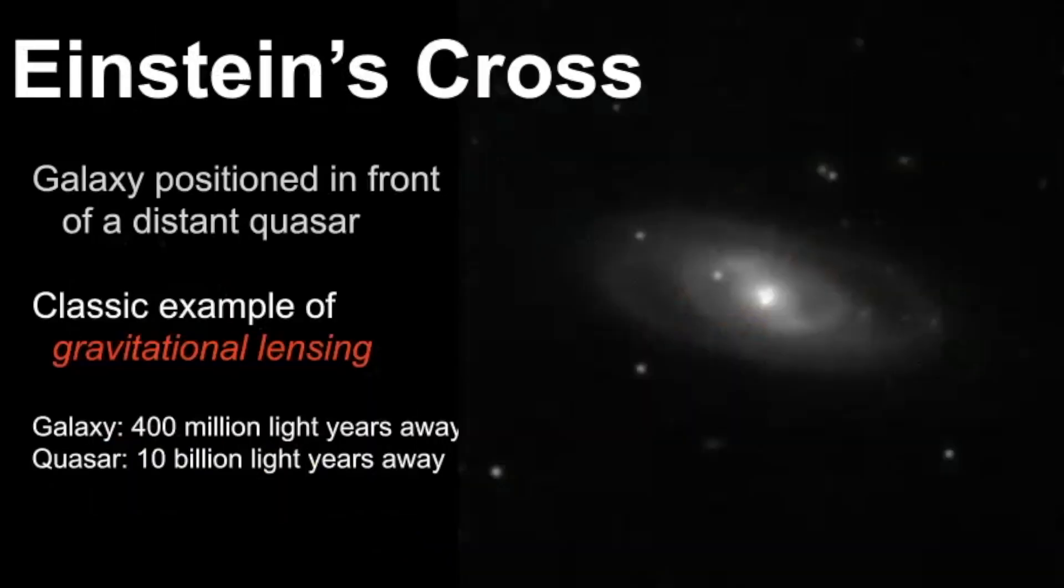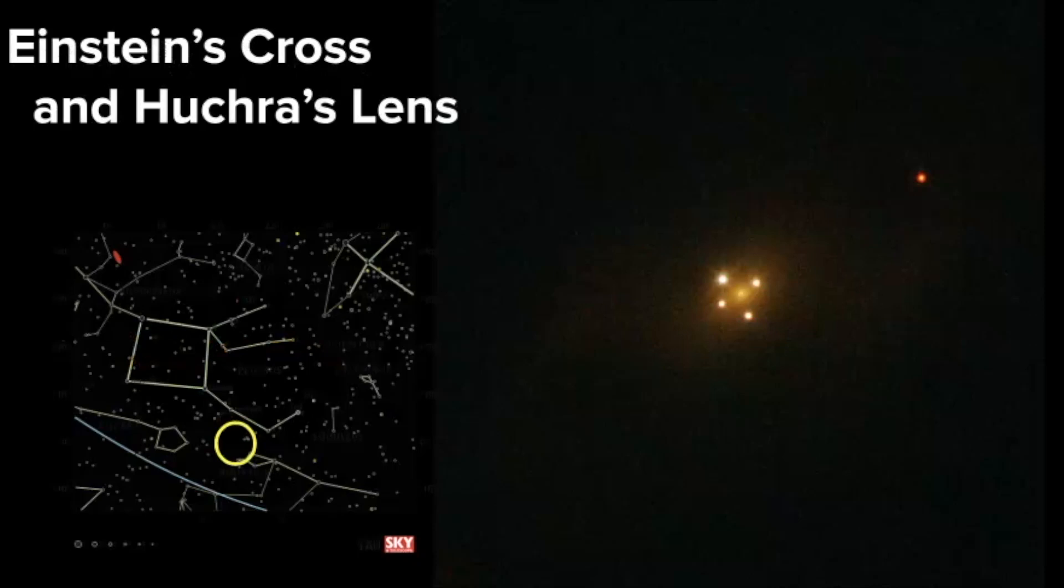So if we were to zoom into this area right here, this is what you would see. And Huchra's lens is the lensing galaxy of Einstein's Cross. So this galaxy was named for astronomer John Huchra, and here you can see that the lensed quasar looks like a cross. And what's interesting is that the gravitational force from the galaxy creates four different images of the quasar.